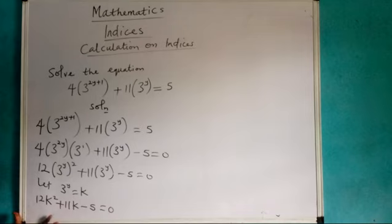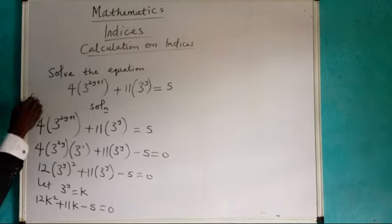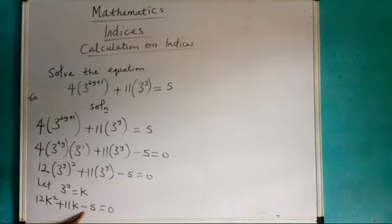It means that I need to factorize. This one is equal to 0, so I'm going to have a quadratic equation. Let 3^y = k. It means that 12 times 5 will be 60, minus 60.